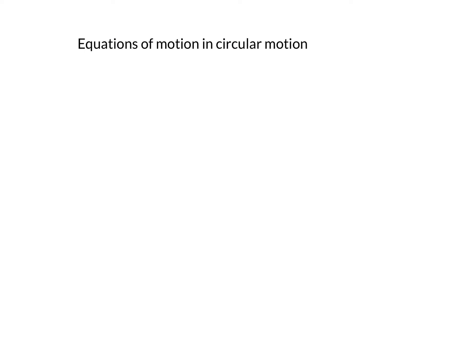In kinematics, if the object moves with constant linear acceleration, we use equations of motion relating final velocity, initial velocity, displacement, time, etc. The same kinds of equations can be used in circular motion for angular components. Analogous to v equals u plus at in linear motion, in angular motion we write: final angular velocity equals initial angular velocity plus angular acceleration alpha into time t. This is equation number 1.